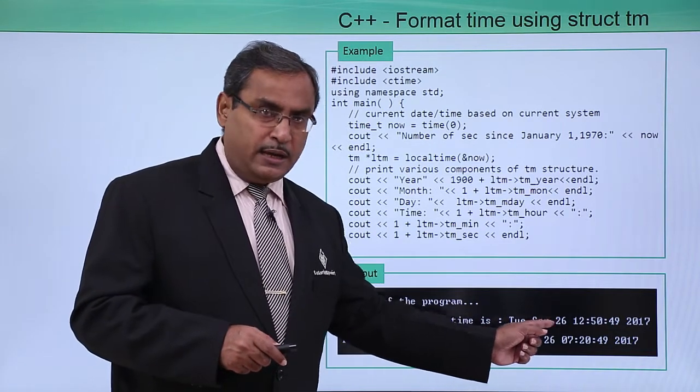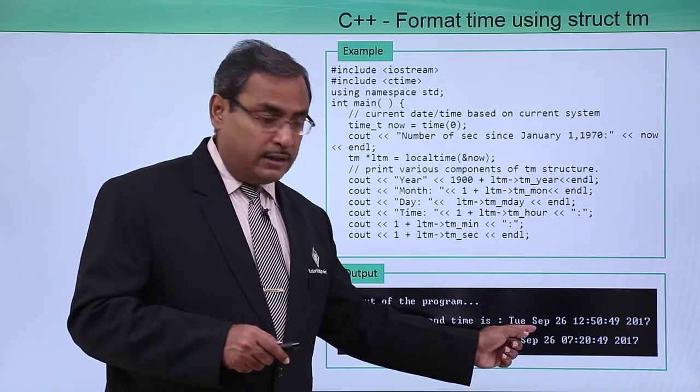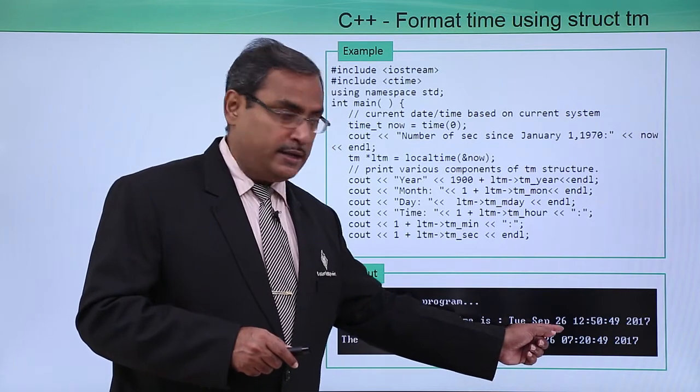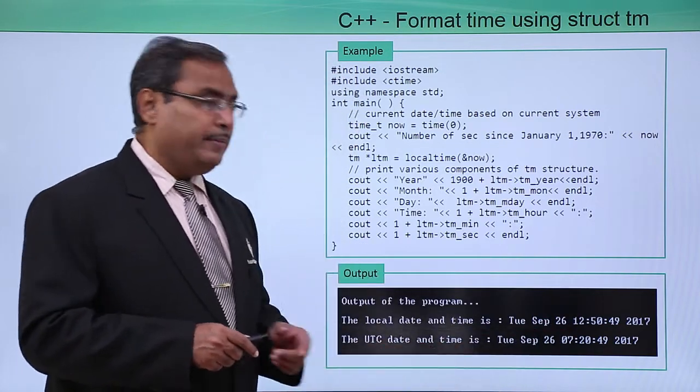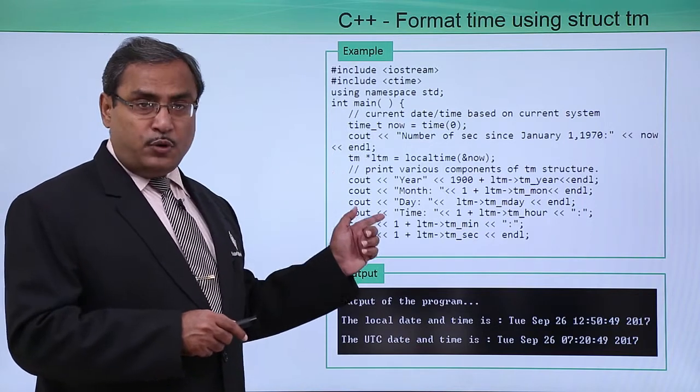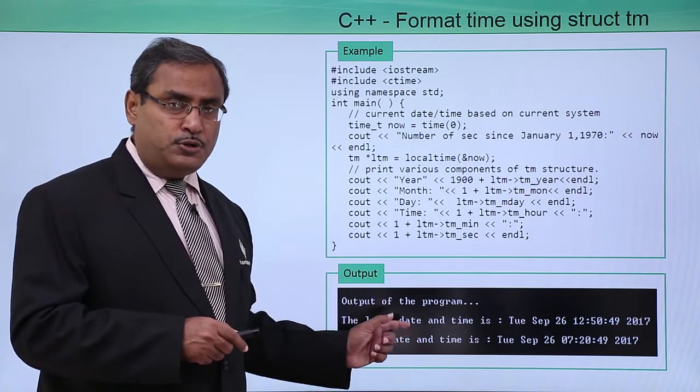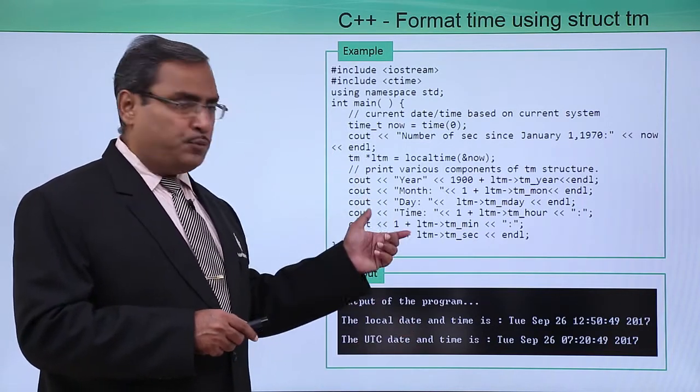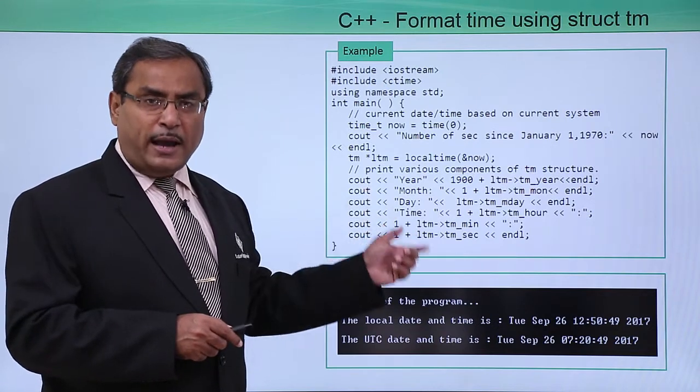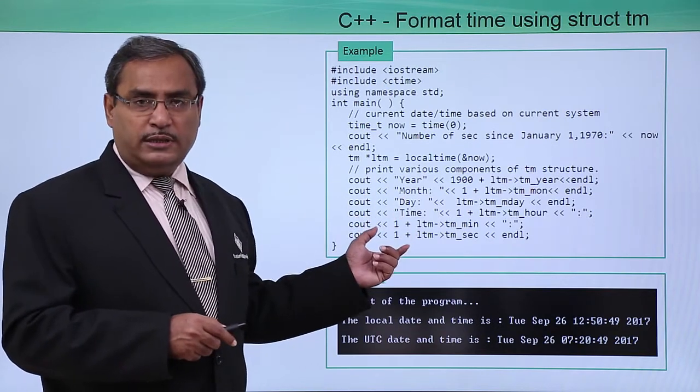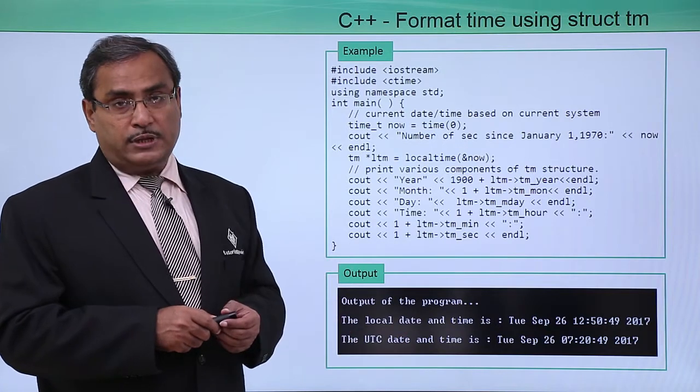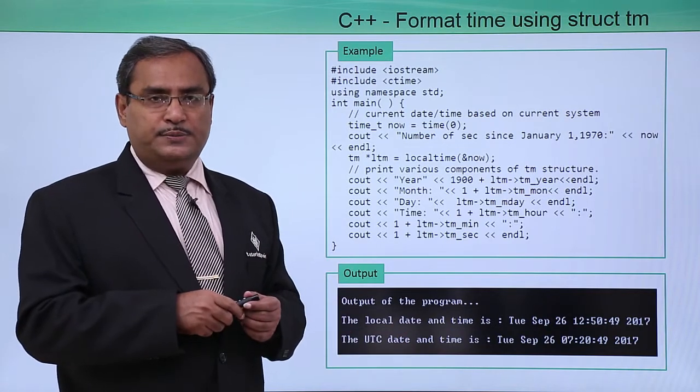We are getting the day of the week, month, date and other details in the output. If you run this program, this is the respective output. I am requesting you to type this program in your editor, compile and run it, and do some experiments to check how the outputs are coming, which will clarify your concepts better.